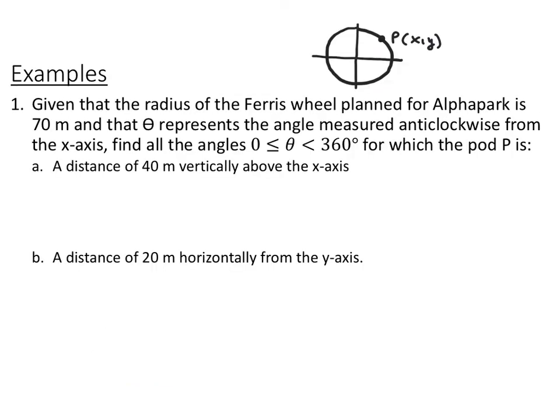For this first example, we're looking at a Ferris wheel. For this Ferris wheel, the radius is 70 meters, and theta represents the angle measured counterclockwise from the positive x-axis. So we're looking at a position of a specific pod, for example, that's going to have a horizontal distance that we're going to call x and a vertical distance that we can call y. For the first one, we want to find the angle where the distance of this pod is 40 meters vertically above the x-axis. So we can draw in our right triangle where our vertical distance is 40 and our hypotenuse, or our radius, is 70, and we want to find that angle.